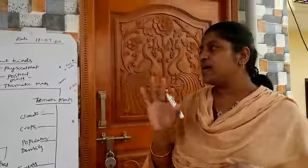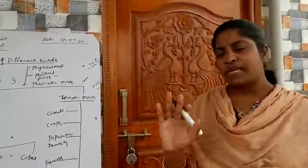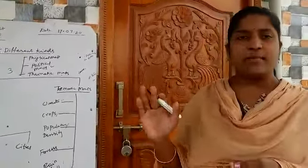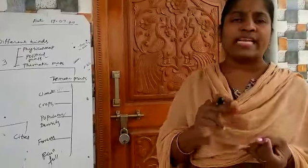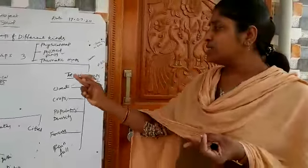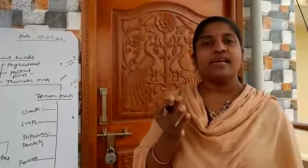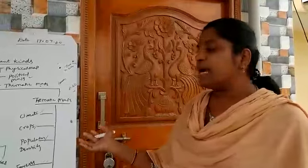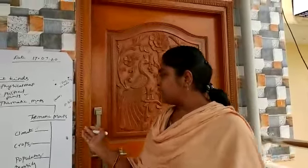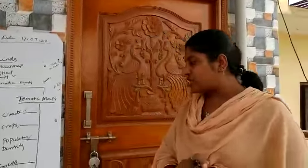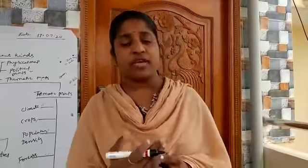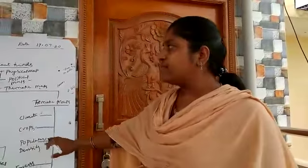Maps are three types: physical maps, political maps, and thematic maps. Physical maps — mountains, plains, and places. Political maps — countries, states, and cities. Under thematic maps — climate, crops, population, forest, and rainfall. These all will come. Now I'm giving you homework — tomorrow you write this chart and keep it in the WhatsApp group. Thank you.